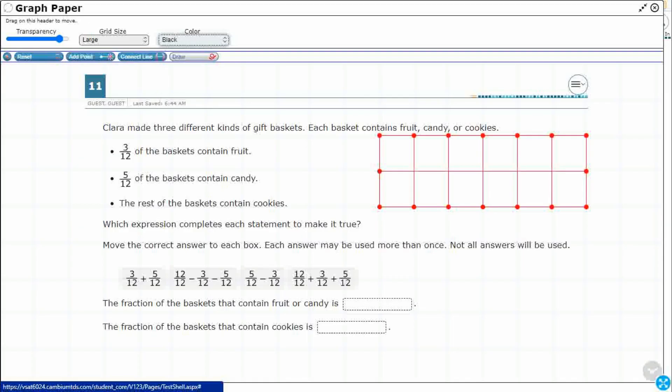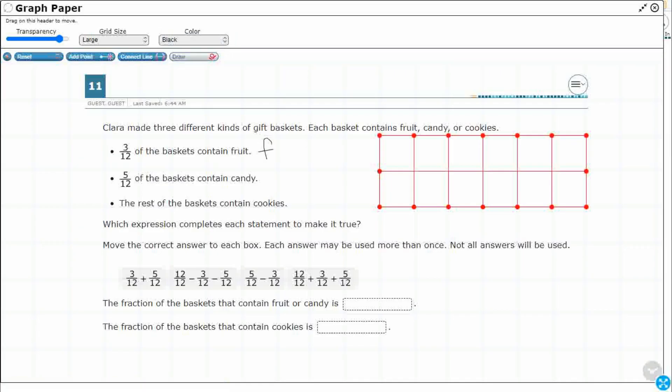It says three 12ths of the basket contain fruit. So I'm going to use black and put an F. Three 12ths - I've got my 12ths here. So one, two, three. There's my three 12ths of fruit.